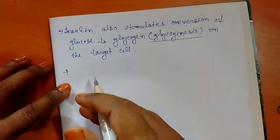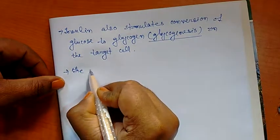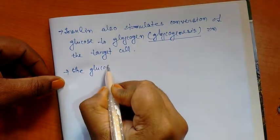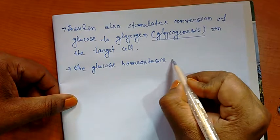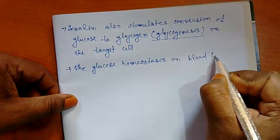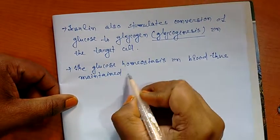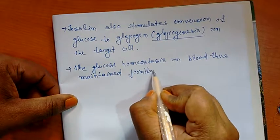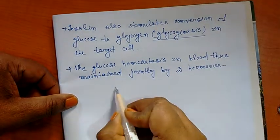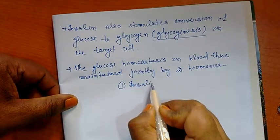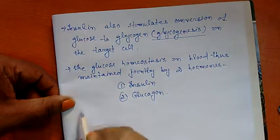The glucose homeostasis in blood is thus maintained jointly by two hormones secreted from islets: one is insulin and the second is glucagon.